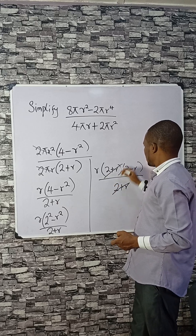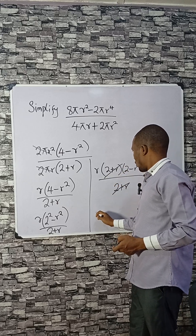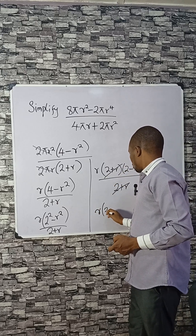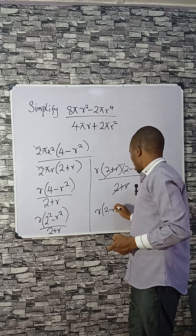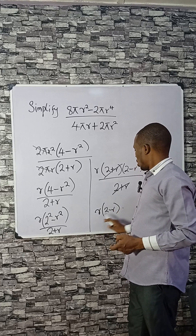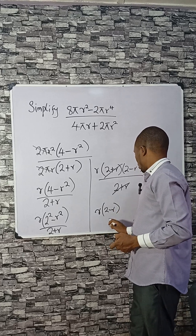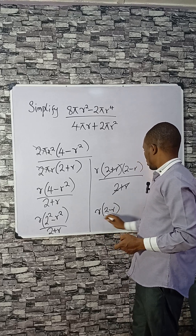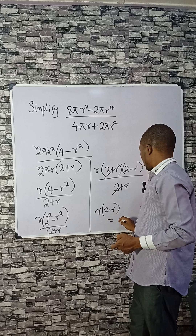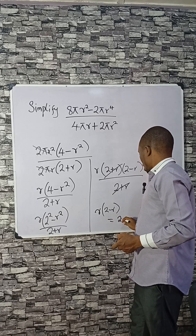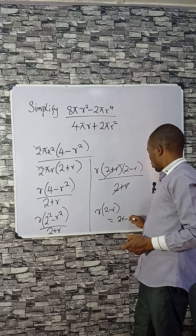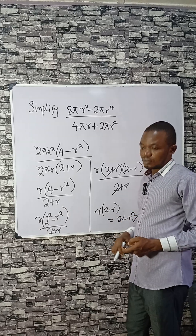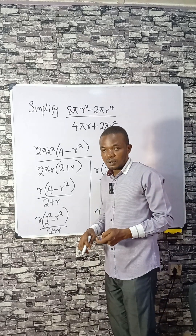The (2 plus r) cancels, so that we have r times (2 minus r). We can stop here, or we can multiply out to leave it as 2r minus r squared. This is the answer.